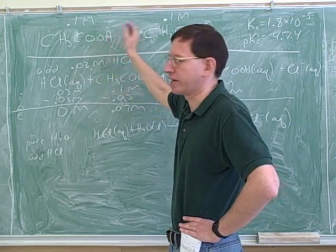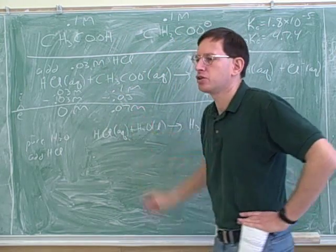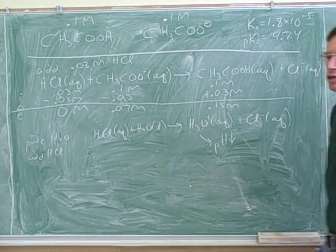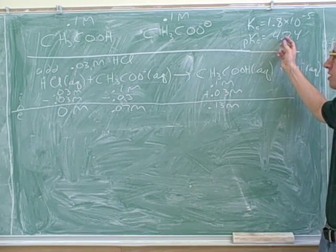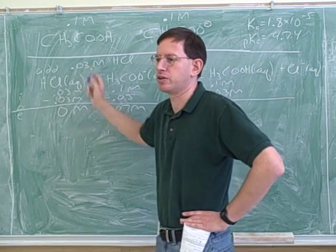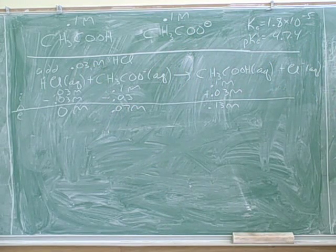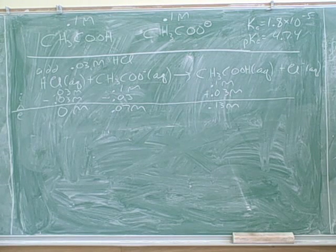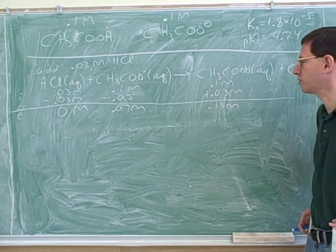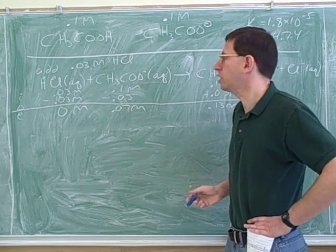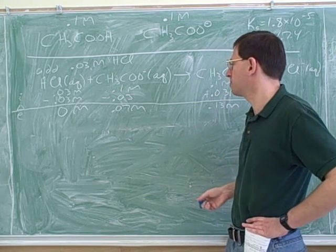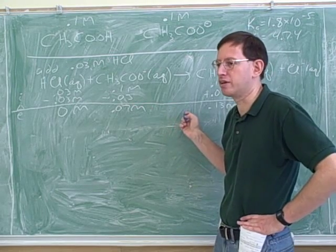Now we've added 0.03 molar hydrochloric acid to the buffer and we know the new concentrations: 0.07 molar acetate and 0.13 molar acetic acid. How do we find the new pH? The concentrations of acid and conjugate base have changed, so you can put those into the Henderson-Hasselbalch equation again. We again have a mix of both the acid and the base, so we can use the Henderson-Hasselbalch shortcut — it'll be faster and less confusing than a start-change-end table.